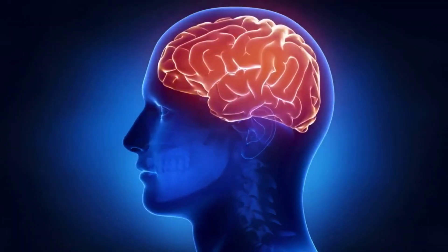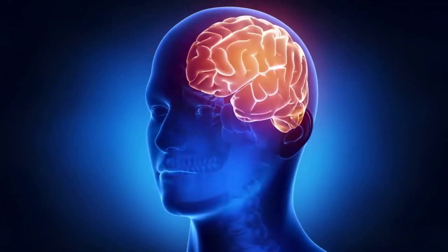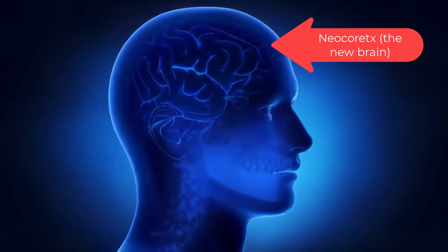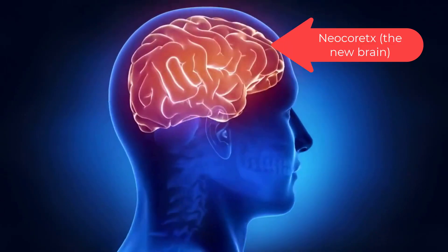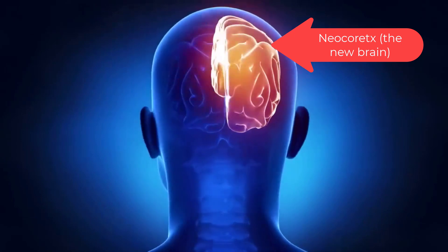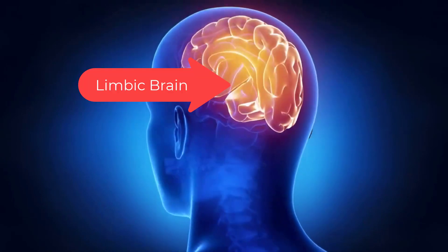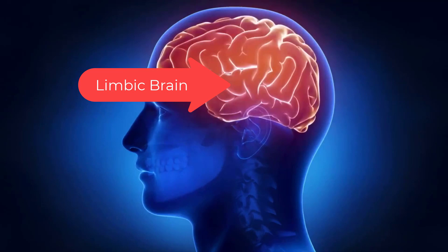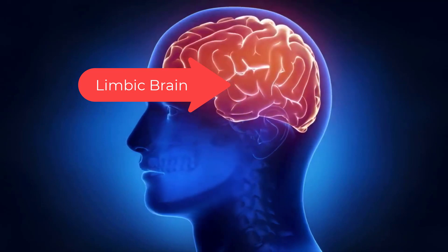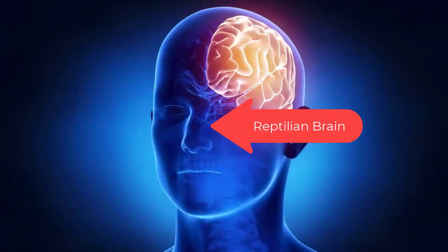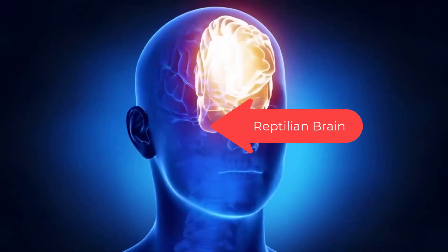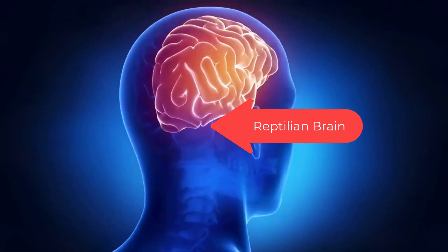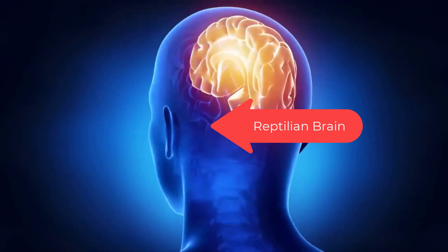Your brain has three basic layers and only one real decision maker. The new brain, the neocortex, thinks and processes rational data. The middle brain, the limbic brain, feels emotions and is our instinct for fight or flight response.